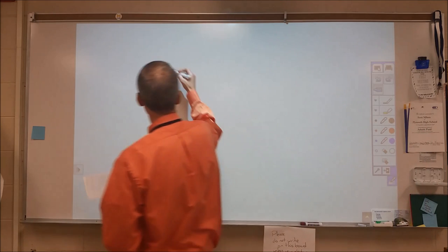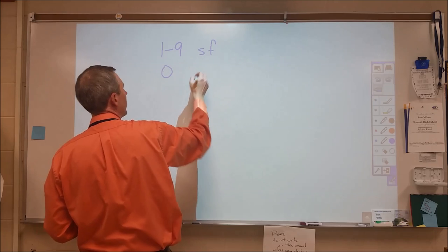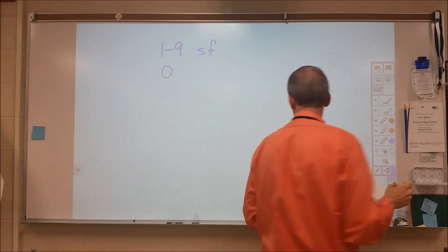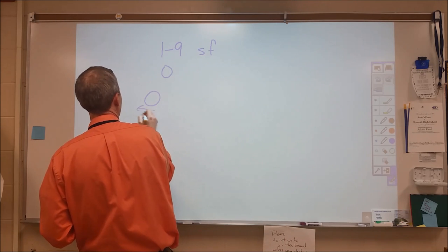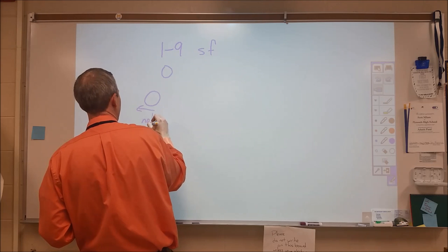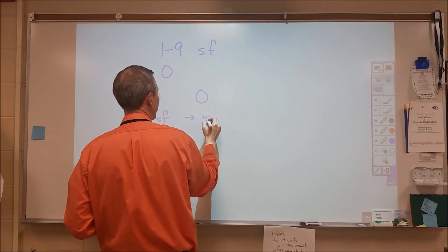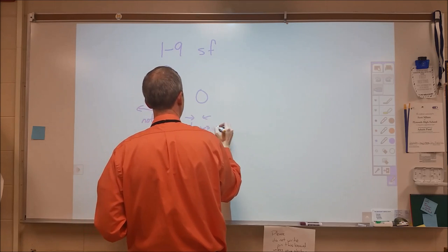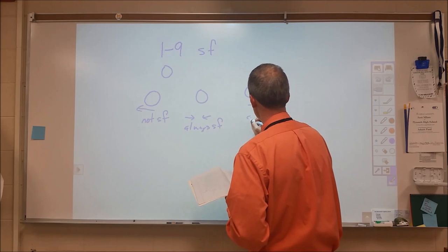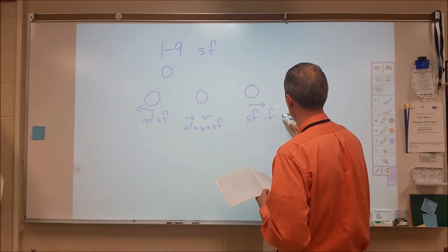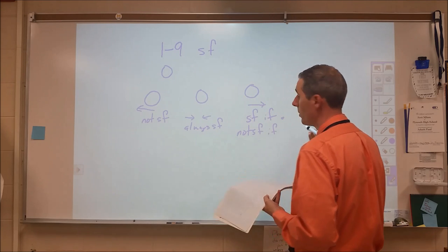Now for the number setting, anytime you write a number 1 through 9, that is considered a significant figure. A zero will depend on its location within the number. So there's three ways to have zeros written. If a zero is off to the left of all the other numbers, then it is not significant. And if the zero is off to the right of all the numbers, it is significant if a decimal place is present, and then not significant if there is no decimal place.